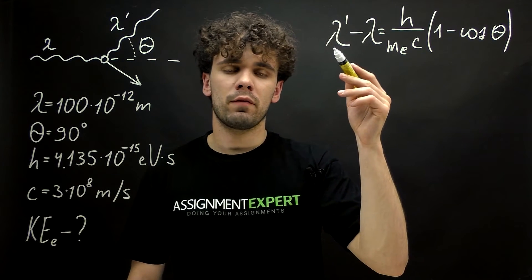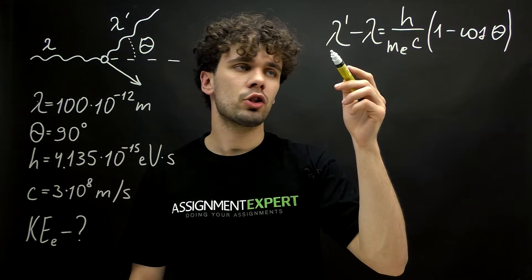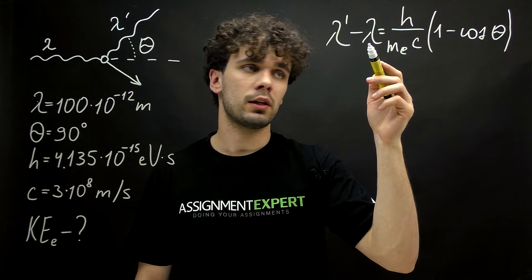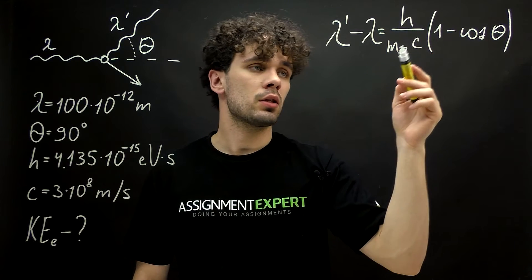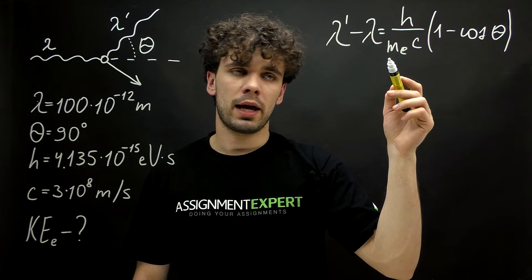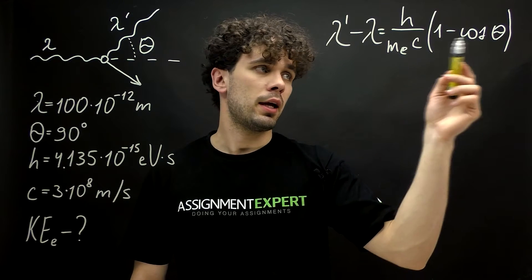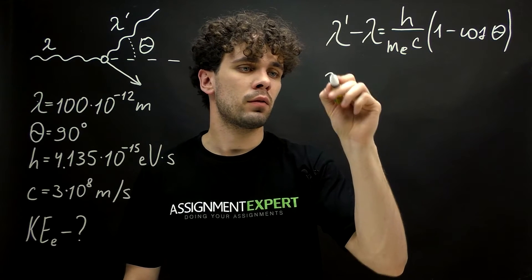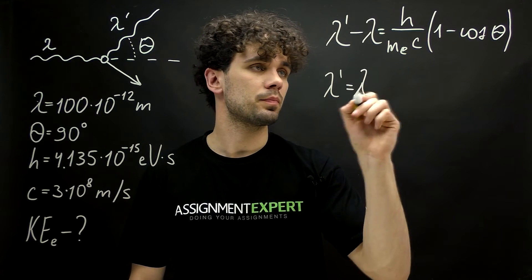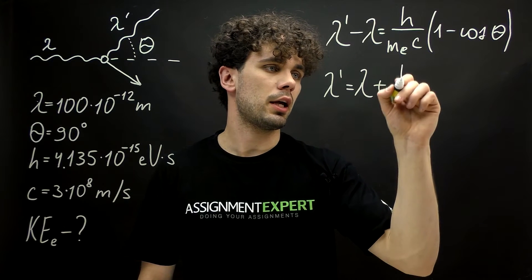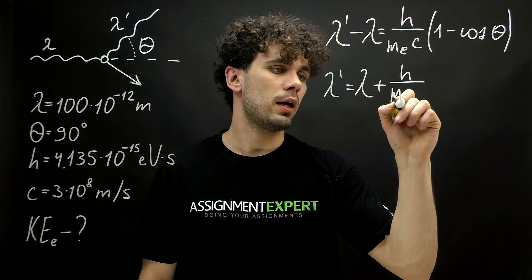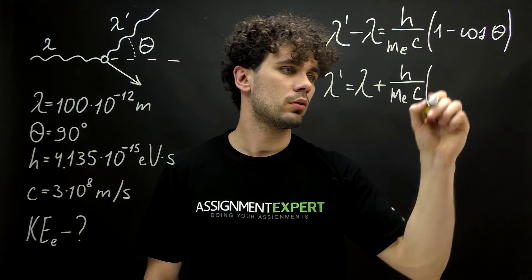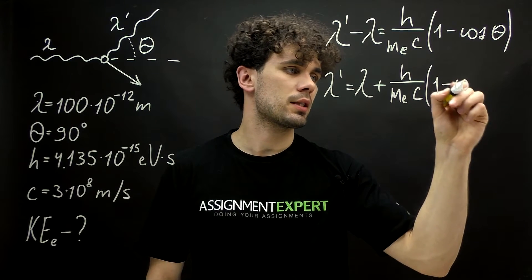And here we have the wavelength of the photon after collision, the wavelength before the collision, the Planck's constant, the rest mass of the electron and the speed of light. And theta is a scattering angle. So, we can derive lambda prime as lambda plus h over mE times c times 1 minus cosine theta.